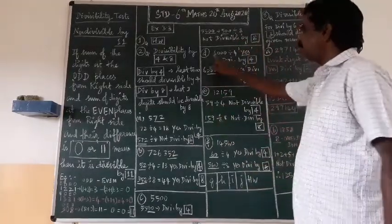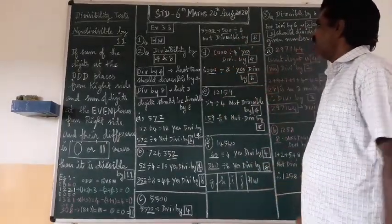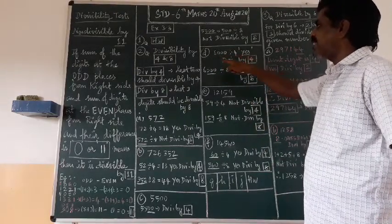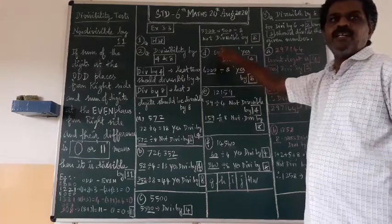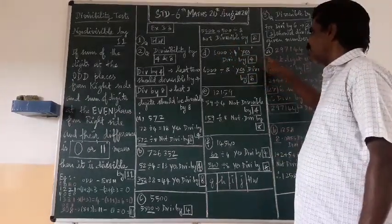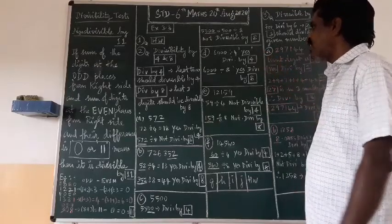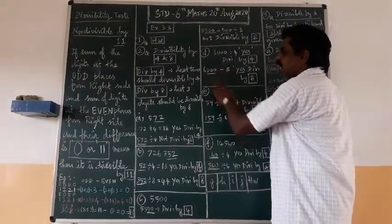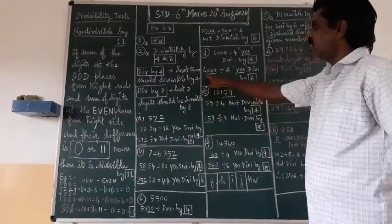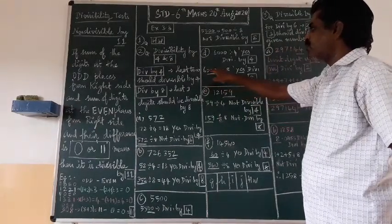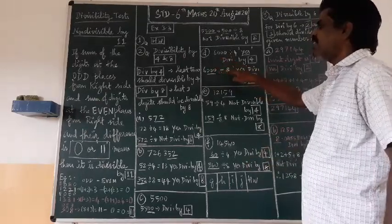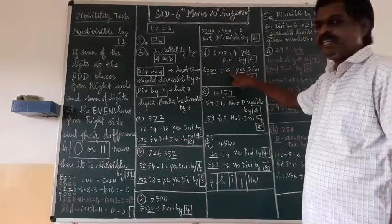Next: 6000. For divisibility by four, last two digits are 00 — yes, 6000 is divisible by four. For eight, last three digits are 000 — but also check 6000 itself: 8 × 2 = 16, remainder 40; 40 ÷ 8 = 5 — yes, 6000 is divisible by eight as well.